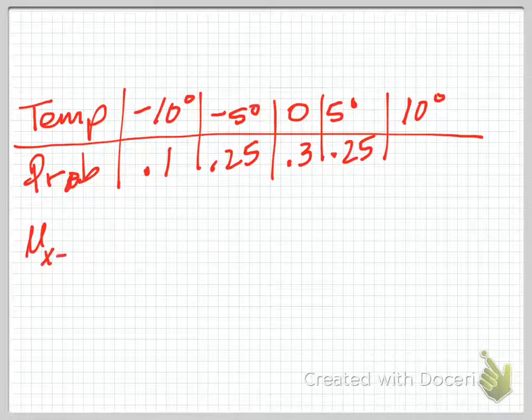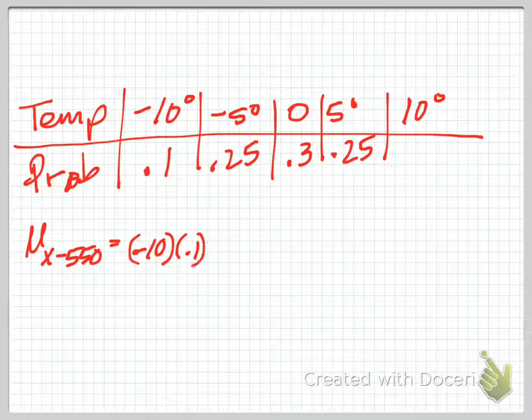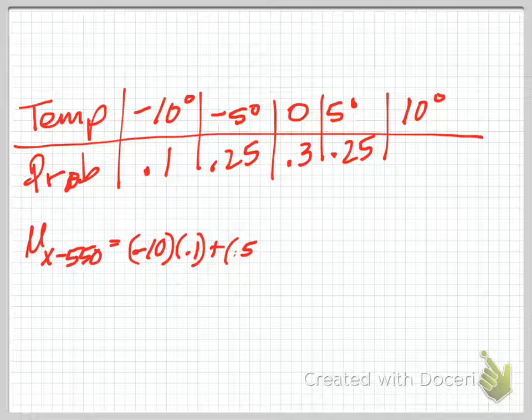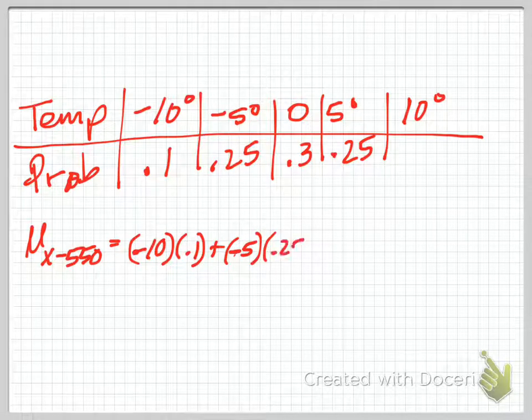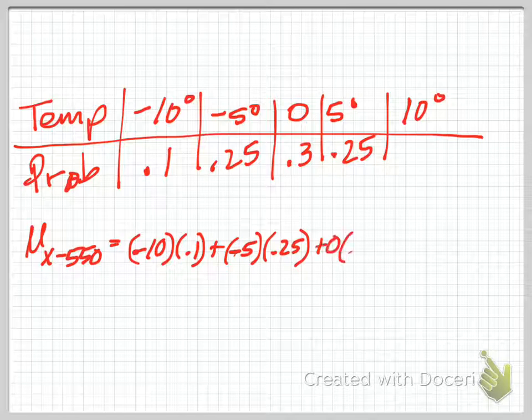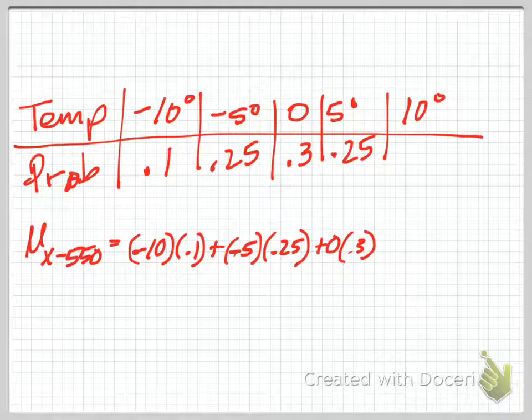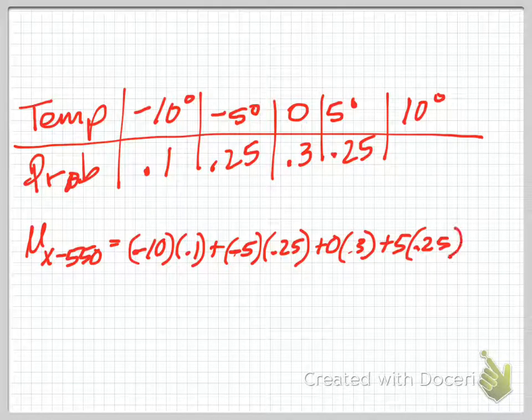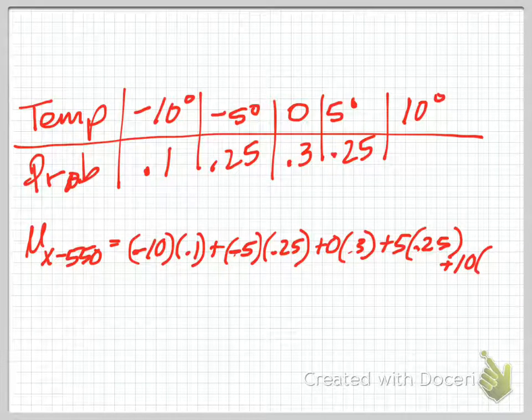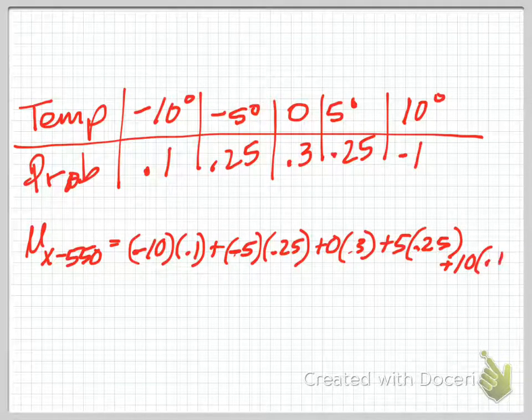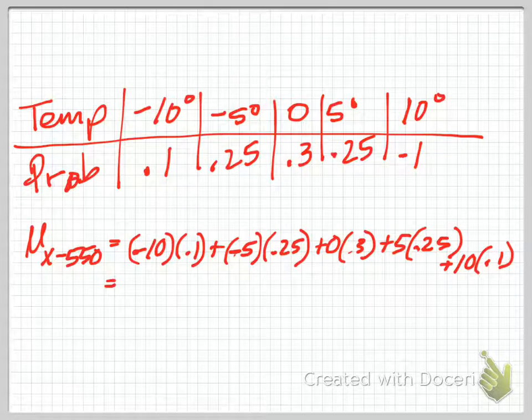Then we'll find this average. So the mean of x minus 550 will be negative 10 times 0.1, plus negative 5 times 0.25, plus 0 times 0.3, plus 5 times 0.25, plus 10 times 0.1. I forgot to fill that in earlier. When I calculate that out, the average distance the temperature away from the target temp was, was 0.